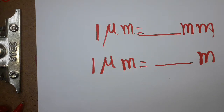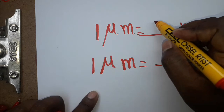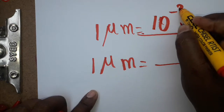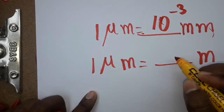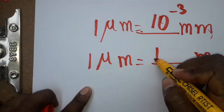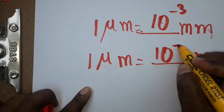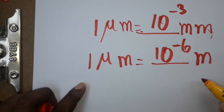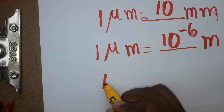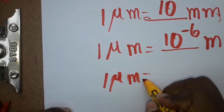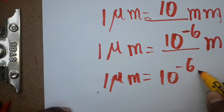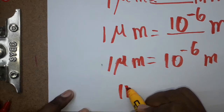Hello friends, today we are going to see what is one micrometer equal to in millimeters and meters. One micrometer is equal to 10 power minus 3 millimeter, and one micrometer is equal to 10 power minus 6 meter.